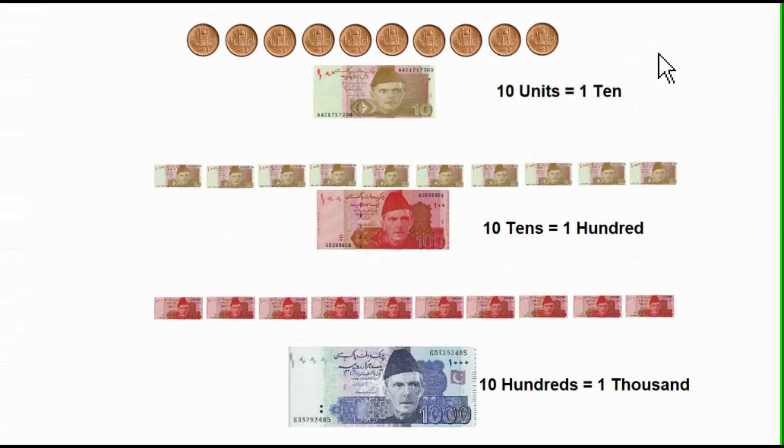For example, 1 rupee coin is 1 unit. So 1, 2, 3, 4, 5, 6, 7, 8, 9, 10. So 10 one-rupee coins is equal to 1 ten-rupee note. So these are units. So 10 units is equal to 1 ten.